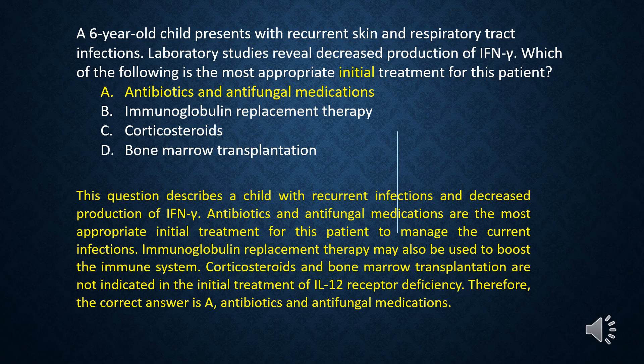This question describes a child with recurrent infections and decreased production of IFN gamma. Antibiotics and antifungal medications are the most appropriate initial treatment for this patient to manage the current infections. Immunoglobulin replacement therapy may also be used to boost the immune system. Corticosteroids and bone marrow transplantation are not indicated in the initial treatment of IL-12 receptor deficiency. Therefore, the correct answer is A, antibiotics and antifungal medications.